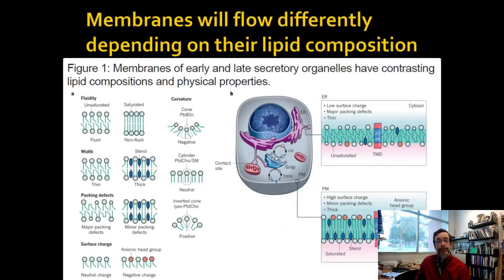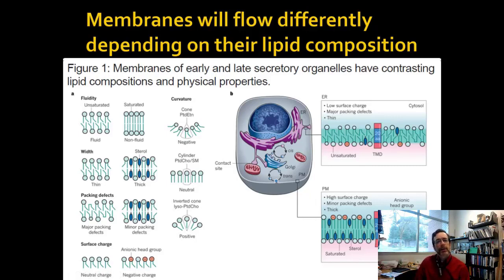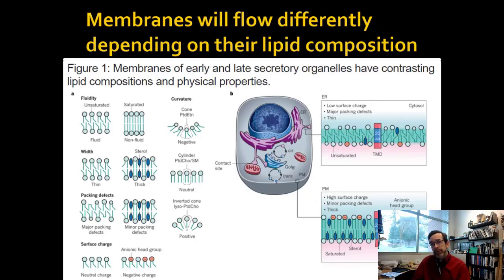There's a nice figure from a paper showing how membrane composition affects membrane fluidity — you might want to pause and zoom in. On the far left, you have all the factors we've talked about: if you have unsaturated chains, you have more fluid membrane; if you have a thin membrane, it'll have fewer contacts between carbons and be more fluid. If you have a thicker membrane with sterols that pack really well, you end up with a more solid, less fluid membrane. It's all a balance — we can give you one of these factors, and you can think through whether it makes the membrane more or less fluid.